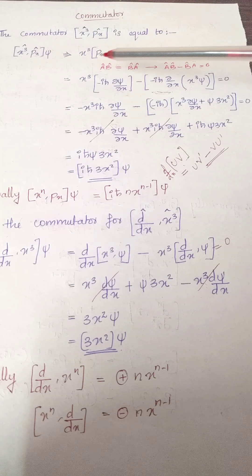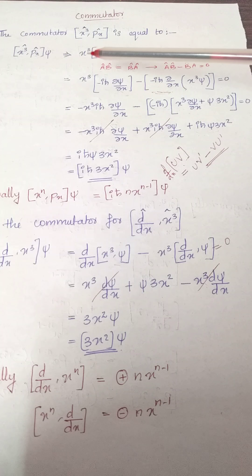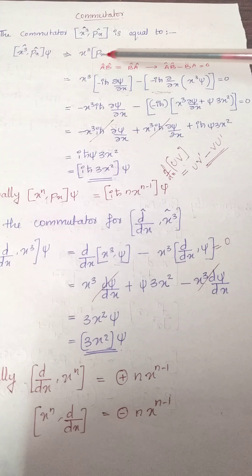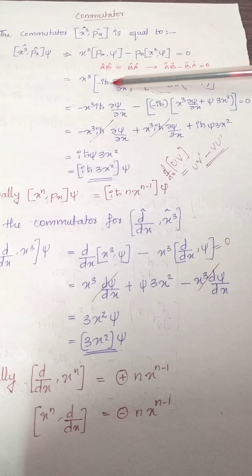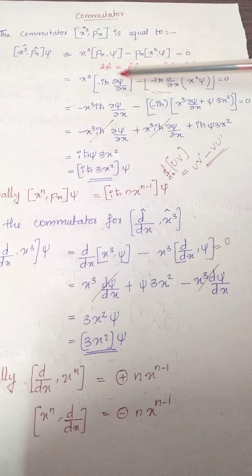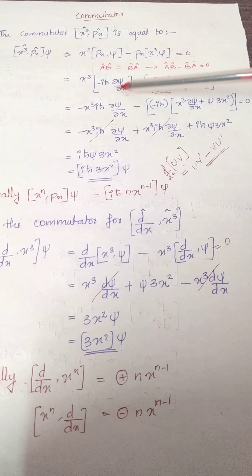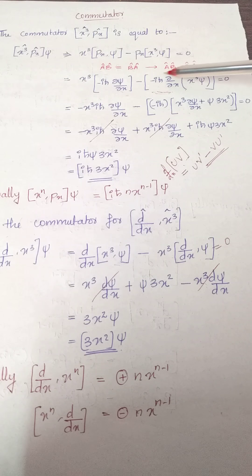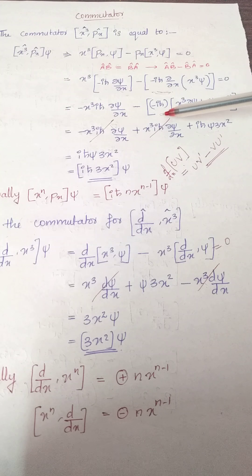So now in the second step, we are trying to put the value of the linear momentum operator. That means x cubed we are writing as such, then px, the linear momentum operator, we are writing it as minus ih-bar d/dx. After multiplication, I have written this minus px means the linear momentum operator, this one, and the same thing we are writing.